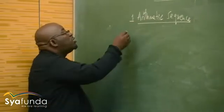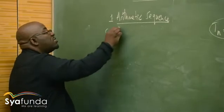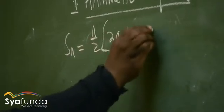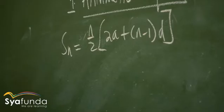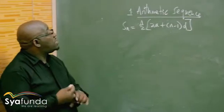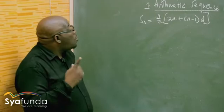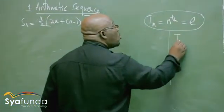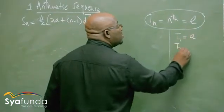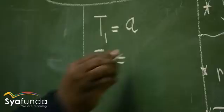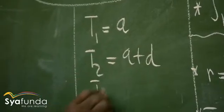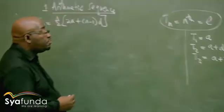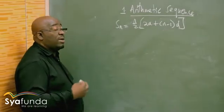If we want to prove S_n equals n over 2 into 2a plus n minus 1 times d, we know from the previous session that in an arithmetic sequence, T1 is generally called a. T2 would be a plus the common difference, so a plus d. T3 would be a plus 2d, and so on. And T_n would be a plus into n minus 1 times d.